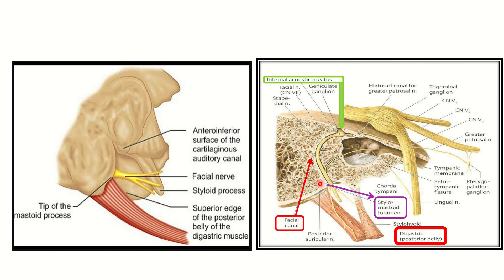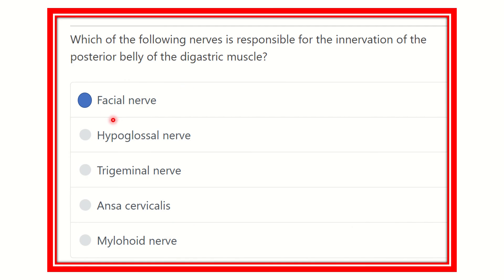When the facial nerve passes the stylomastoid foramen, it gives three branches: one is the digastric branch, which supplies the posterior belly of the digastric; the second is the posterior auricular branch; and the third is the branch to the stylohyoid muscle. So the posterior belly of the digastric muscle is supplied by the facial nerve.